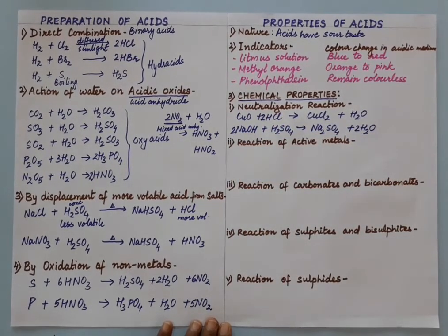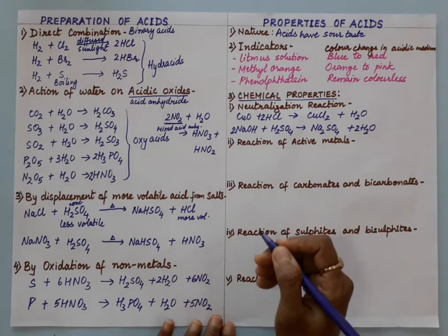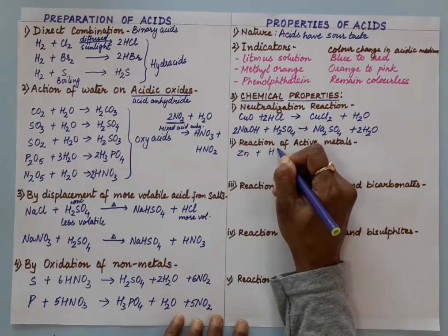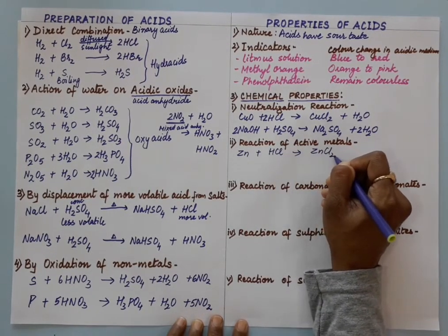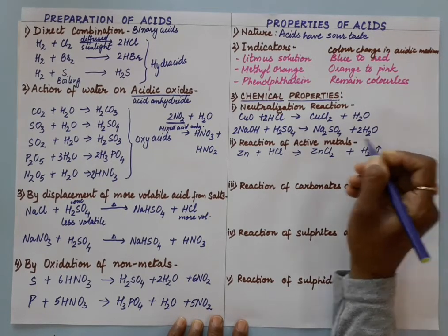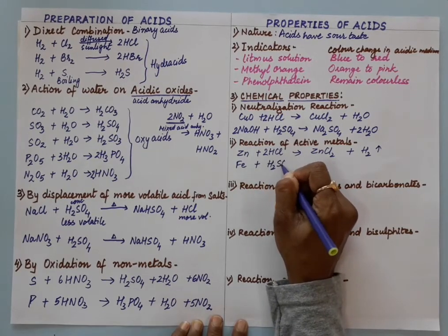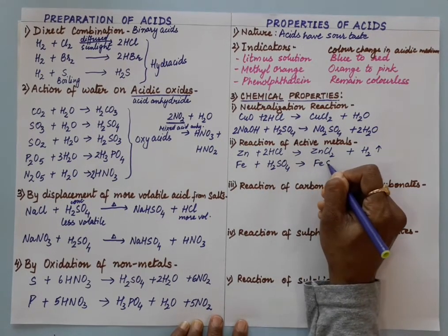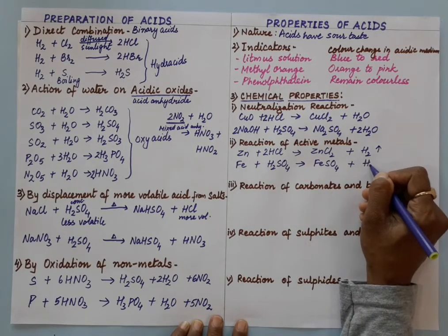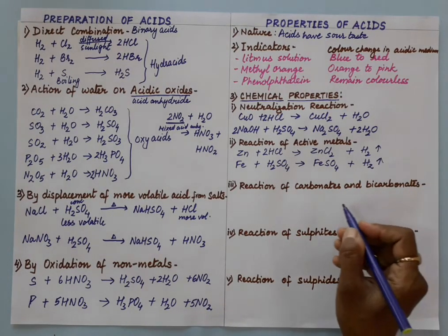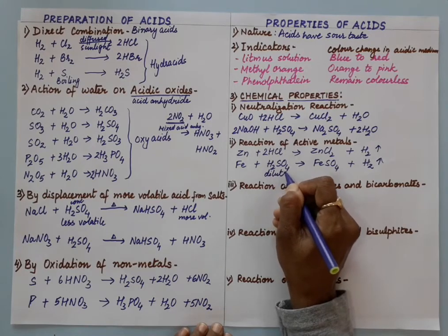Next is the reaction of active metals. Metals from potassium to iron in the activity series will react with dilute acid to liberate hydrogen. Zinc when reacts with acid gives the corresponding salt plus hydrogen gas. Iron reacts with sulfuric acid or HCl to give the corresponding salt plus hydrogen. So from potassium to iron, all metals react with dilute acid to liberate hydrogen.